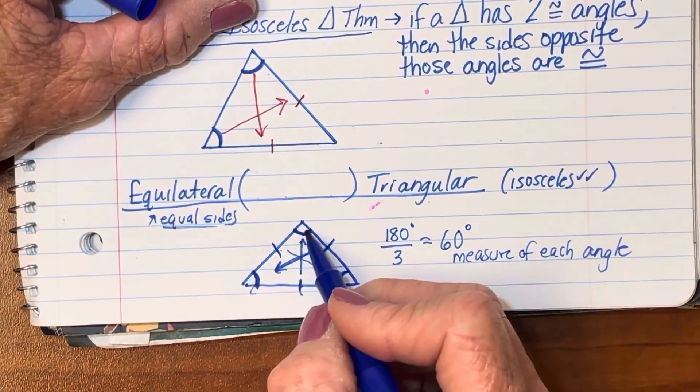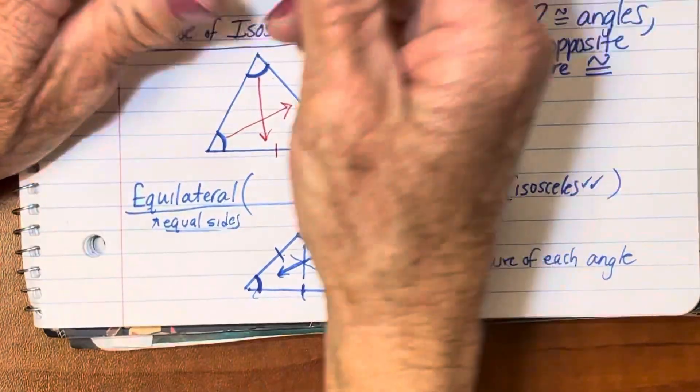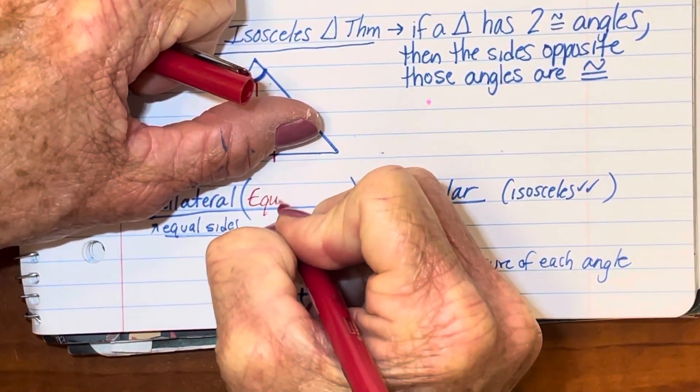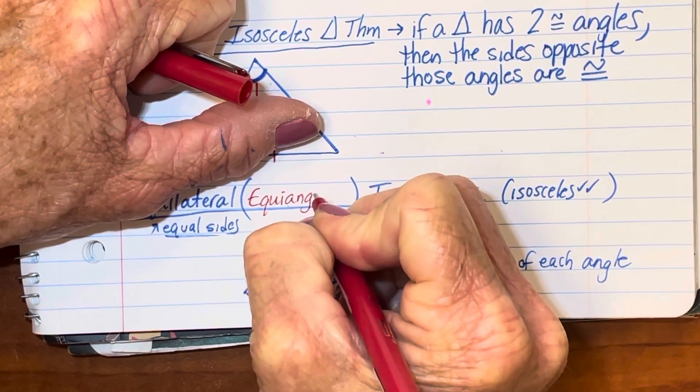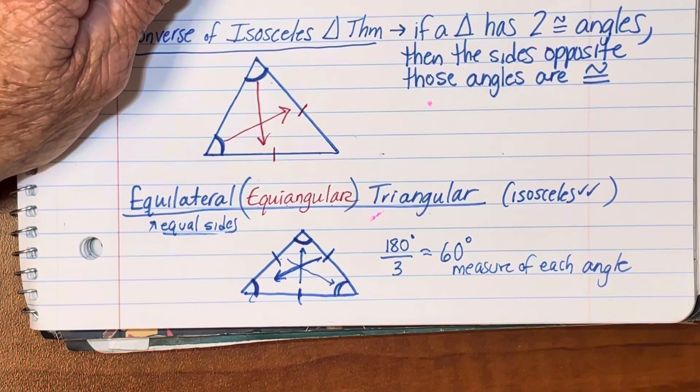And because an equilateral triangle also has three equal angles, another name for it is if it's equilateral, it's also going to be equiangular. All three pair of angles will be congruent.